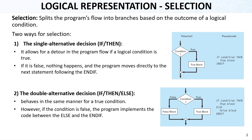The single alternative decision allows for a detour in the program flow if a logical condition is true only. If it is false, nothing happens — it moves directly to the next statement following the end. In the pseudocode, you can see: if condition, then true block, and it finishes. There is no false block.